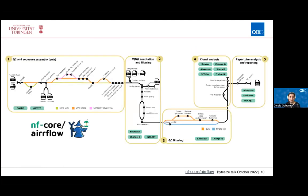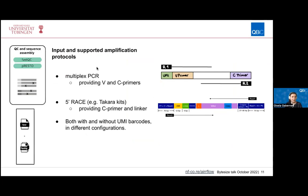Looking at the pipeline in more detail, there are many individual processes. Starting with QC and sequence assembly, the pipeline supports different sequencing protocols including multiplex PCR — where users provide the V and C primer sequences used for amplification — or 5-prime RACE, providing the C primer and linker sequences. Both protocols are supported with and without UMI barcodes, and the barcodes can be provided in different configurations. Starting from the raw sequencing data, a sample sheet containing sample information and individual FASTQ files for all samples needs to be provided.